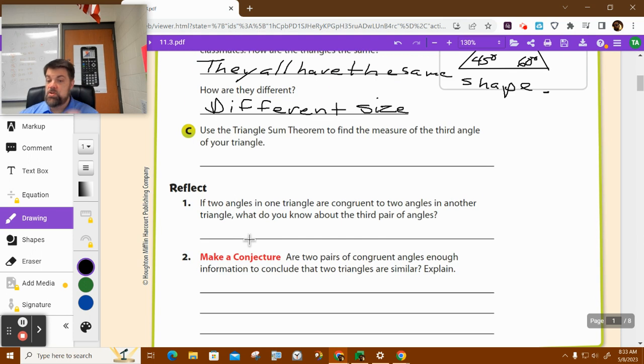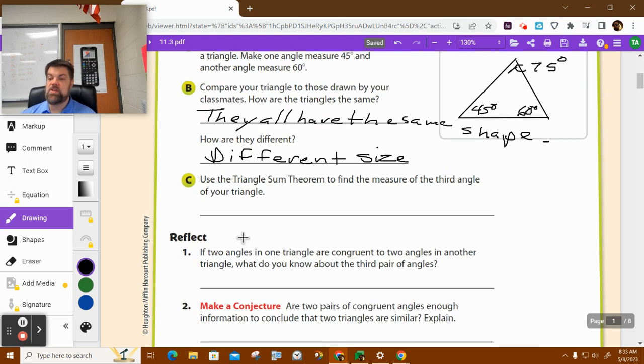And then it says use the triangle theorem to find the measure of the third angle. So we did that already. It's funny. I never really read what I'm going to teach you guys. I just start doing math. And then that adds up to 105. So it's 75 degrees. Okay.